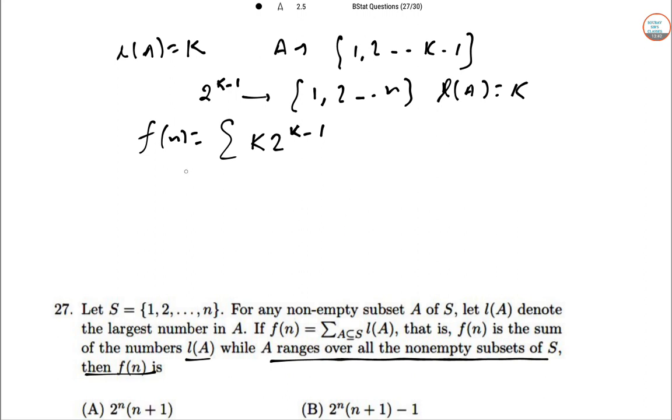Now F(n) = Σ K·2^(K-1). So now we can compute this value and our job is done. Σ K·2^(K-1) from K=1 to N.